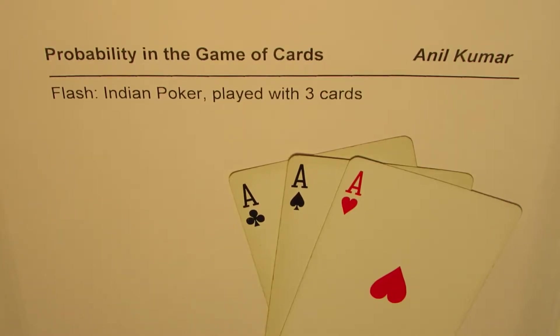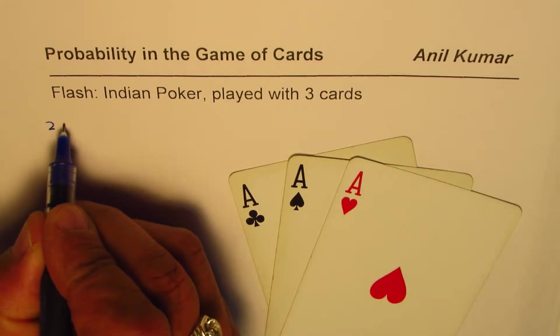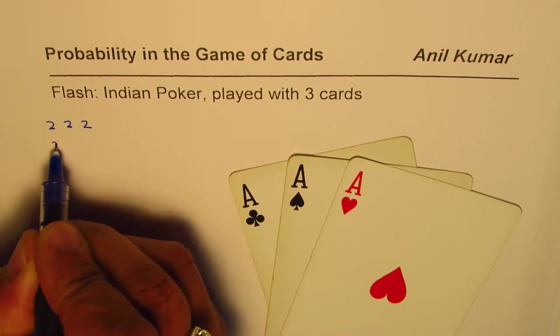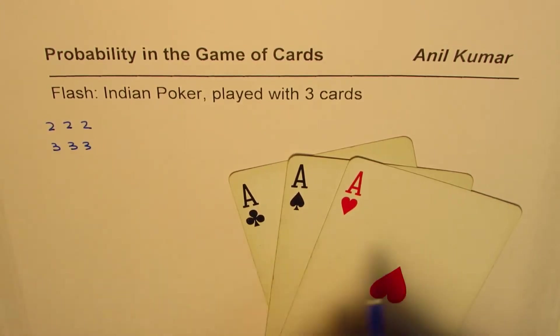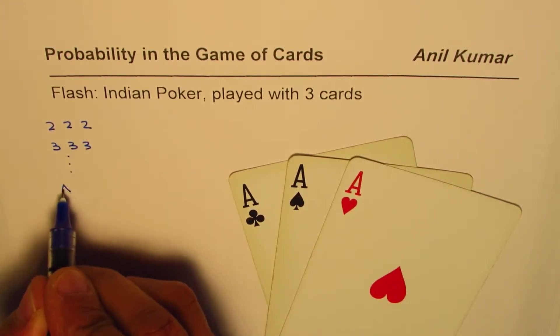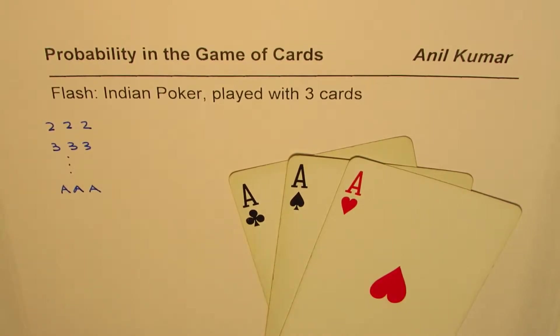The person whoever gets a flash is the ultimate winner. You could get three twos, you could get three threes, you could get any combination, and the ultimate of course is three aces. Let us see how to find probability of getting a trail.